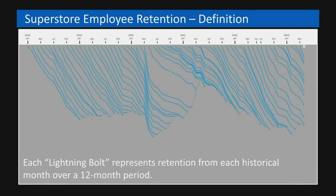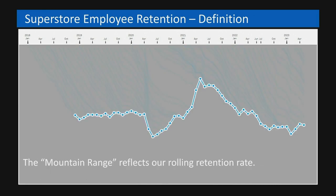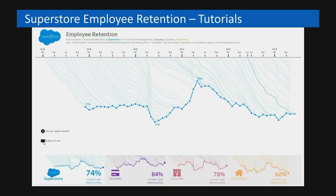So this is the basics behind it. What I've called these lightning bolts — each of them represents a starting period and then the 12-month retention from each of those points. They kind of come together to form what I've called this mountain range, which is the rolling 12-month retention in our company. That all works great if I've got two minutes to explain what we mean by retention rate, and that's why I built these tutorials.